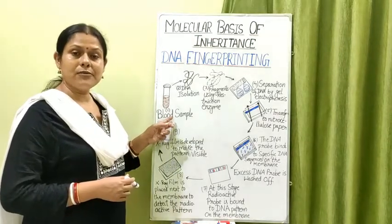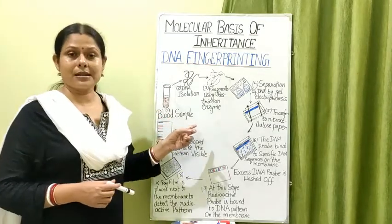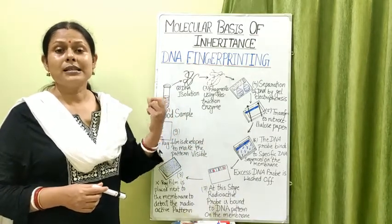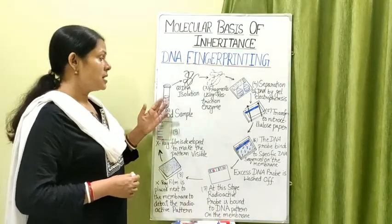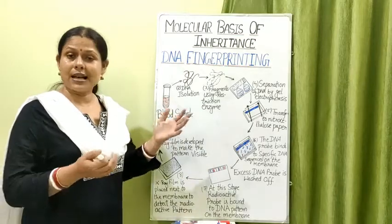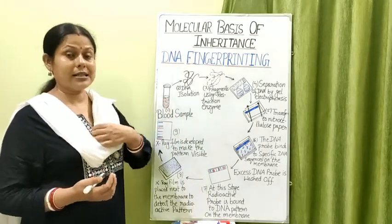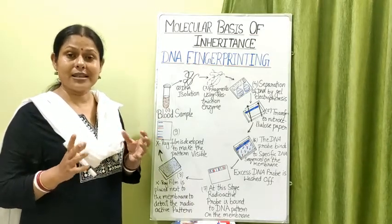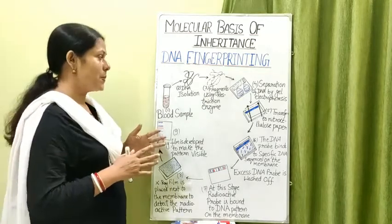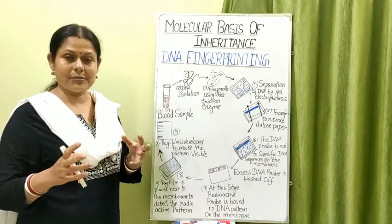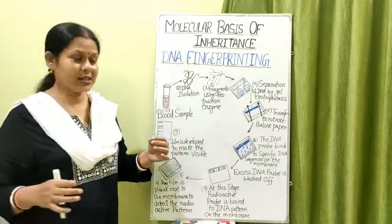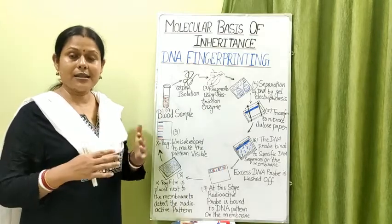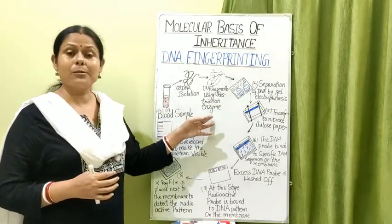The first step in DNA fingerprinting is to collect the sample — here, a blood sample is used. Next, the DNA present in the cells must be extracted from the nucleus, so isolation of the DNA is done with the help of various enzymes. These enzymes act as molecular scissors, isolating and cutting the DNA into fragments, since DNA is quite long in eukaryotic cells.